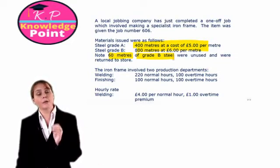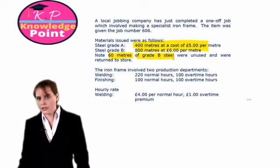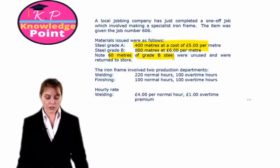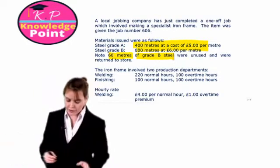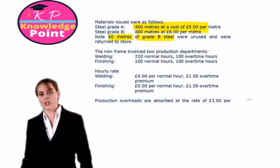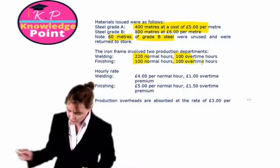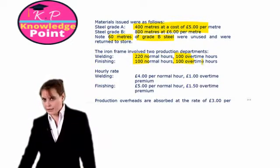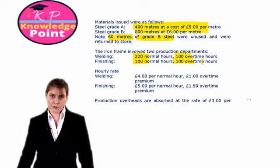We need to be careful when preparing our job card: we are only going to charge the customer for the materials actually used in the production of this specialist iron frame. Then we're told the iron frame involved two production departments — welding and finishing — and we're told how many hours were worked on the job in each of the two departments. We are also given the labour costs, or the hourly rates, in each of those two departments. In welding, it's £4 per normal hour and £1 overtime premium.